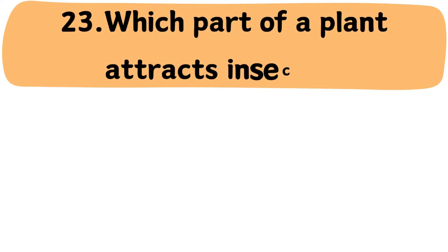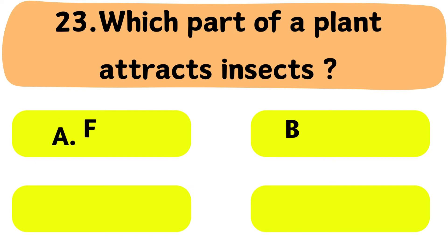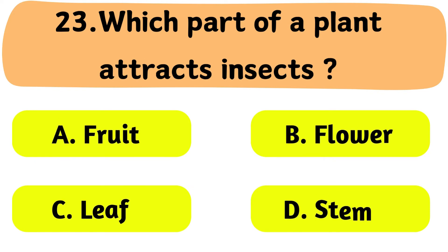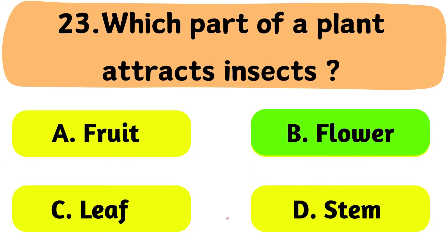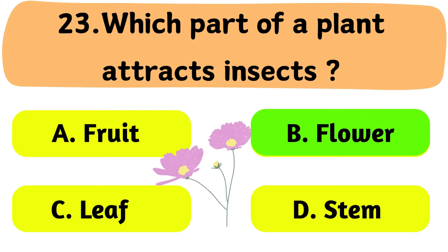Question No. 23: Which part of a plant attracts insects? A. Fruit. B. Flower. C. Leaf. D. Stem. The correct answer is Option B: Flower.